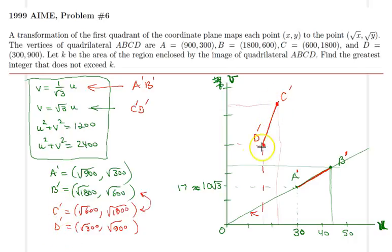I know that this line, when extended, goes through the origin as well. Now we have the sections of two circles which are centered at the origin, and we know their radii. The radii are √1200 and √2400. All we need to do now is to find the area of the region bounded by these four segments.